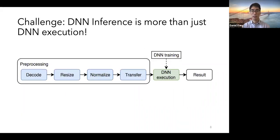A key challenge now, though, is that deep neural network inference is more than just DNN execution. For example, as we can see here, there's many steps for pre-processing the data, including decoding the image, resizing it, normalizing it, and transferring it to an accelerator before the DNN is executed. And I detail these steps in more detail in the full paper.